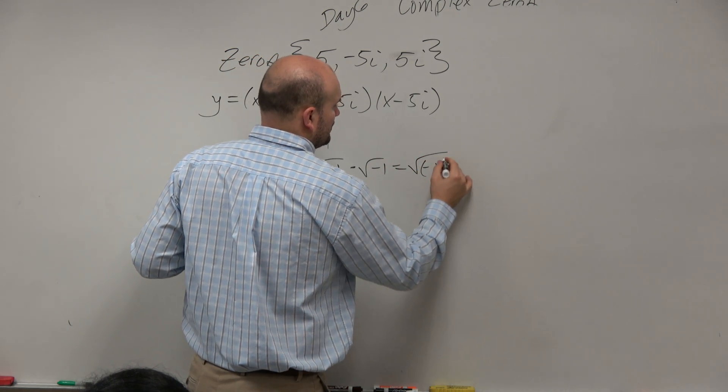That x minus i square root of 5 times x plus i square root of 5, that gives you that difference of two squares multiplication. So what this tells me is my first two numbers are the same, my last two terms are the same, I have alternating signs. All I have to do is multiply the first two terms and the last two terms, because the middle terms add to 0.